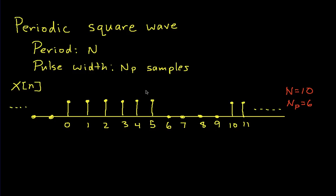This is actually going to use two tricks that show up quite a bit in discrete-time Fourier series analysis. The signal that we want to find the Fourier series coefficients for is a periodic square wave. It has period cap N, and we'll assume that the pulse width is N_p samples. For example, if N were equal to 10 and N_p were equal to 6, then I would have 6 samples with magnitude 1, then 4 samples with magnitude 0, then another 6 with magnitude 1, and so on. This is the waveform we will be finding the Fourier series coefficients for.